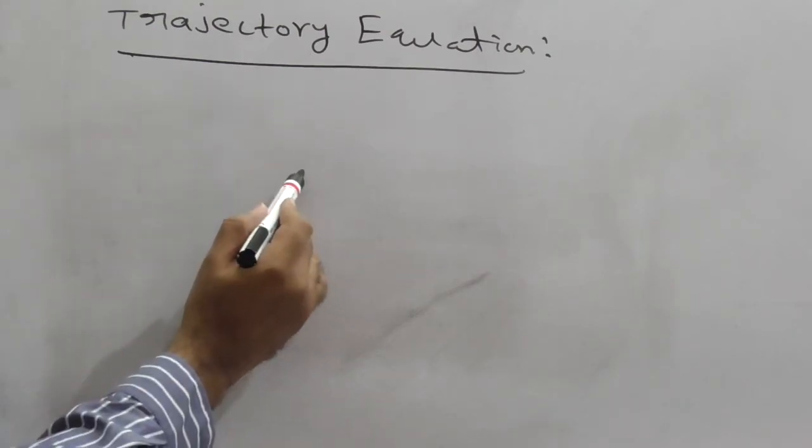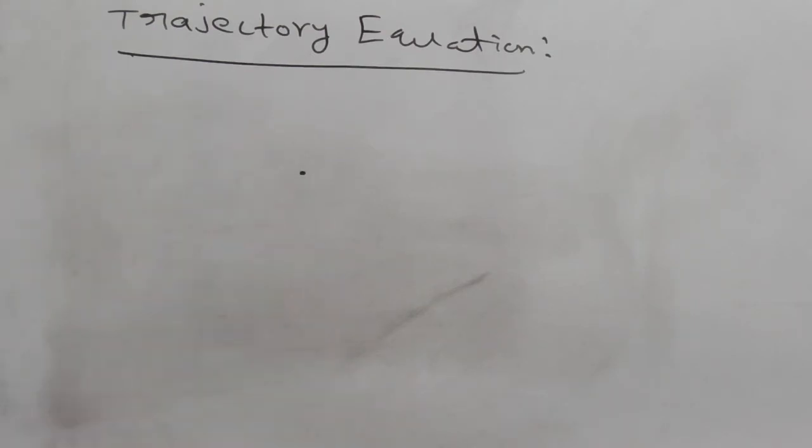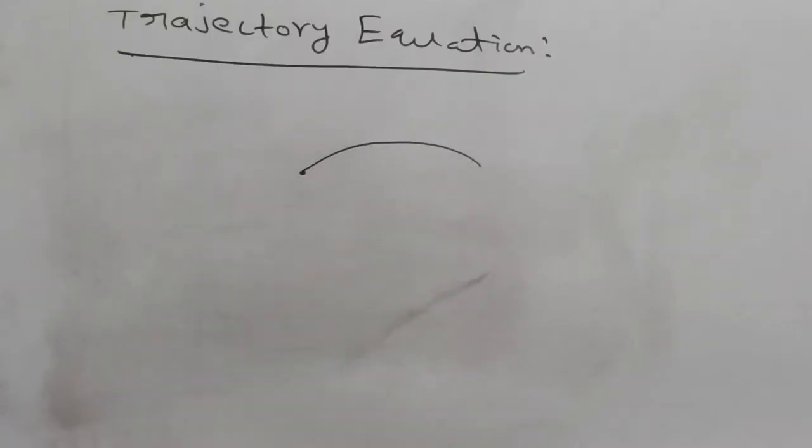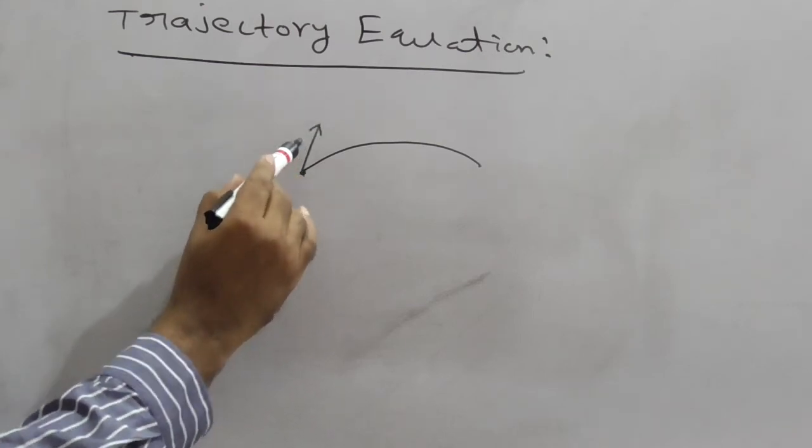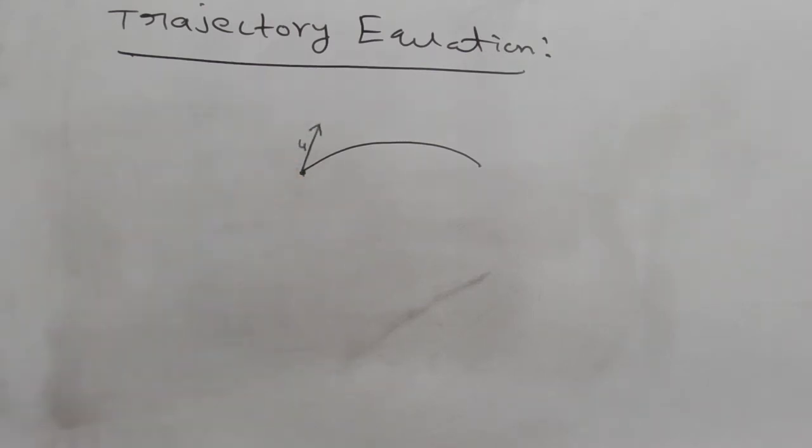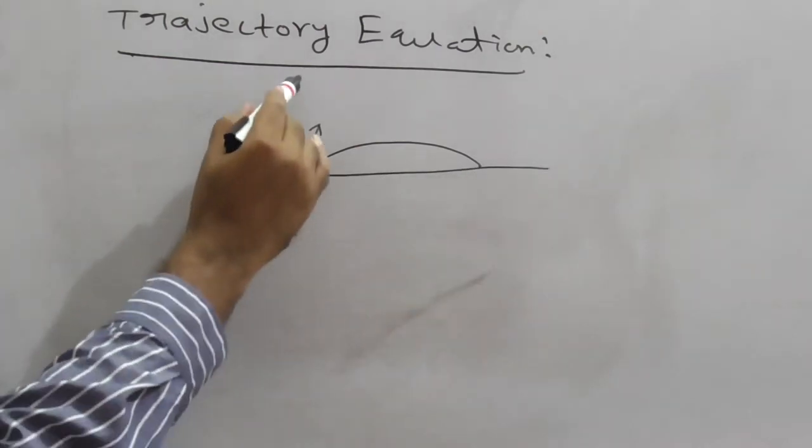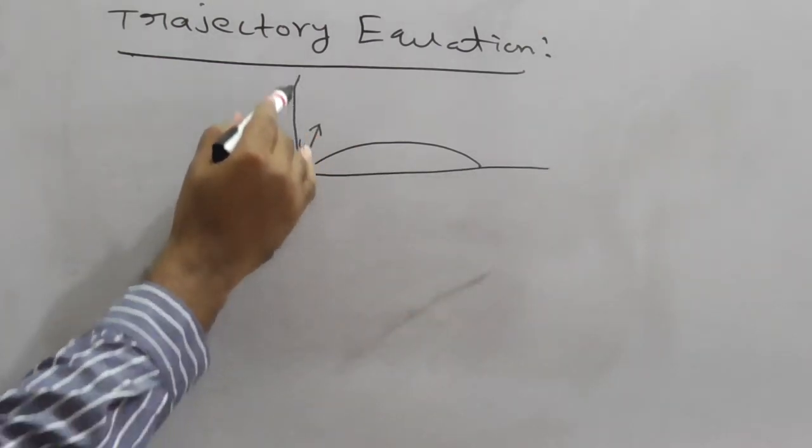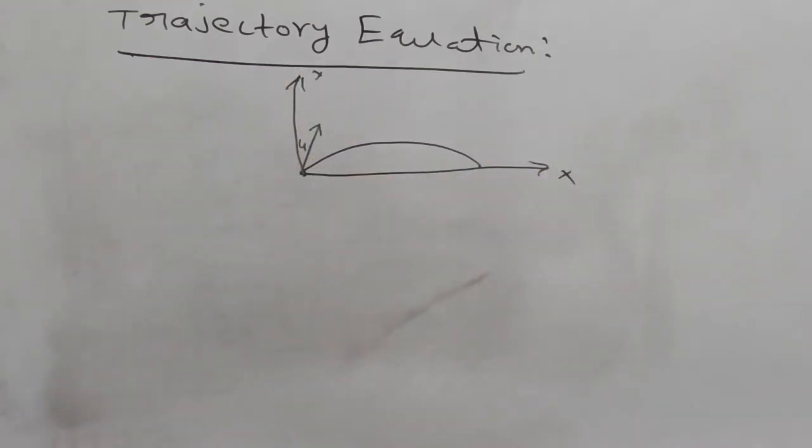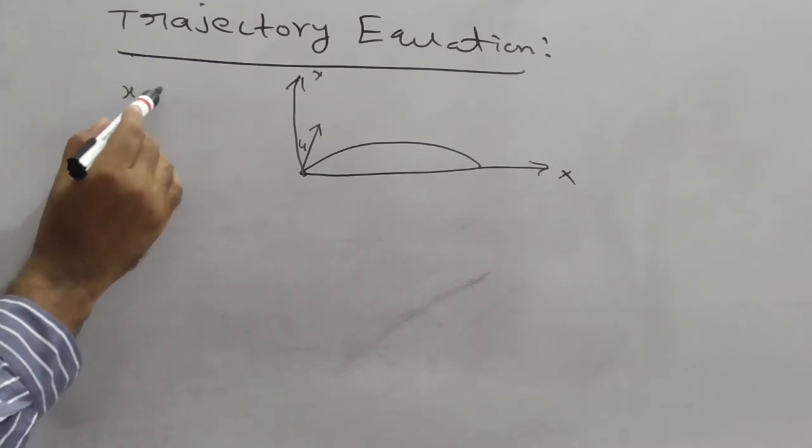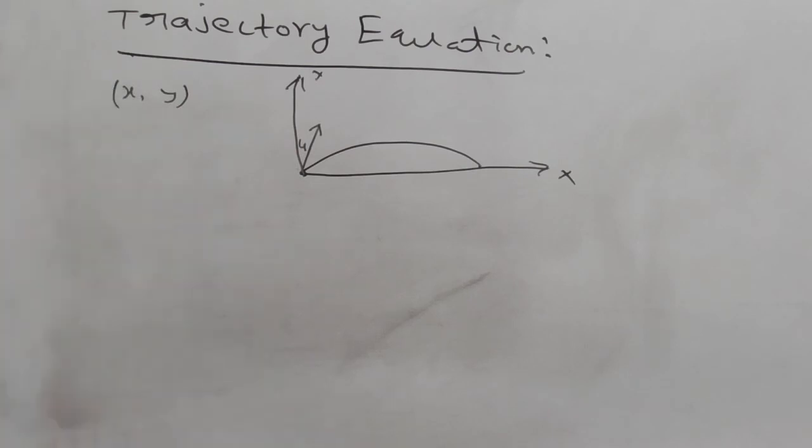So observe here, for example a particle is thrown from this point, like this, with an initial velocity u. So let it is x axis and let it is y axis. The trajectory equation gives the relation between x and y in projectile motion.